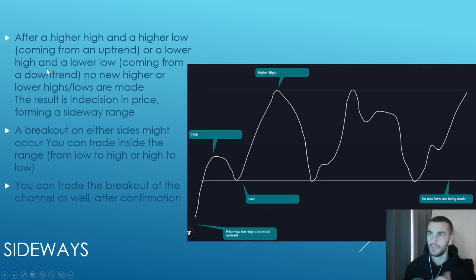About sideways moves: let's say price is coming from a potential uptrend. You have a high, have a low, make a higher high, and then price is not making new highs or new lows - it's just purely sideways. After higher high and higher low, no new high or lower highs or lows are made, and the result is indecision in price forming a sideways range.